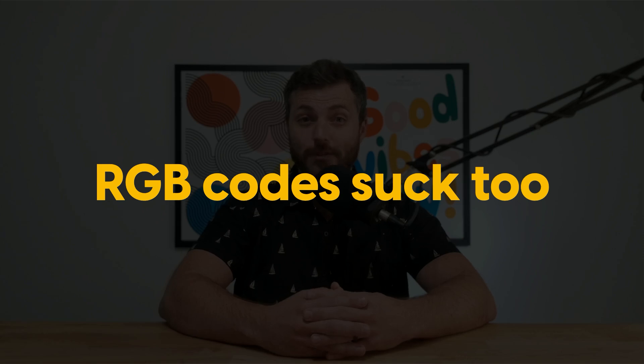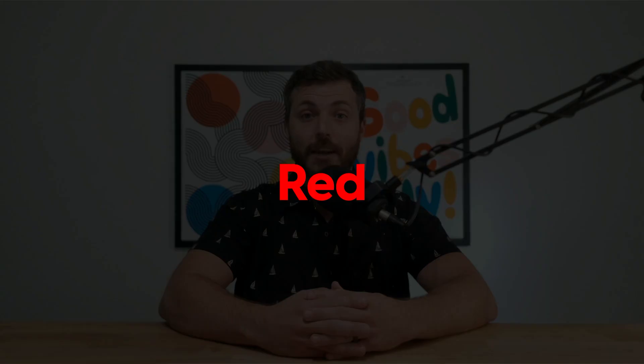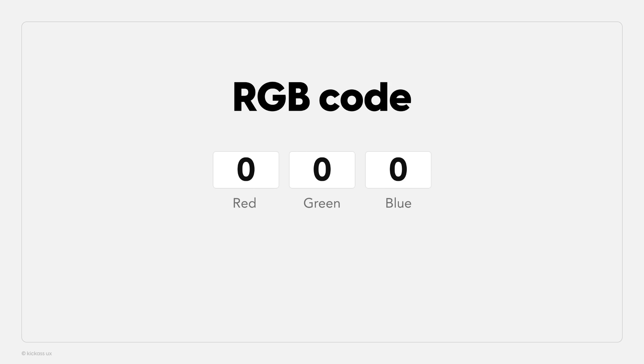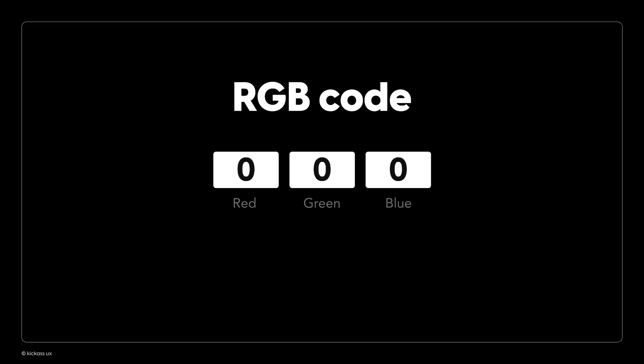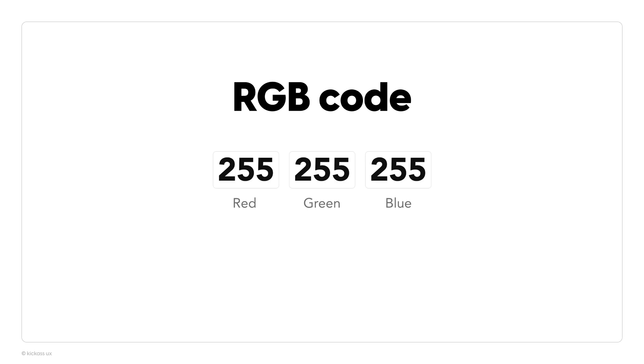RGB codes are just as bad. RGB stands for red, green, and blue. To change the color of an RGB code, you choose a number between 0 and 255 for each of the three values. 255, 0, 0 is red; 0, 255, 0 is green; and 0, 0, 255 is blue. 0, 0, 0 is black, and 255, 255, 255 is white. So what color would you expect 23, 175, and 102 to come out to? It's green — but how the hell would you be able to tell that from those codes? You can't, unless you're the Rain Man. So again, RGB codes suck.